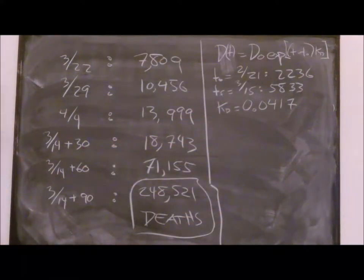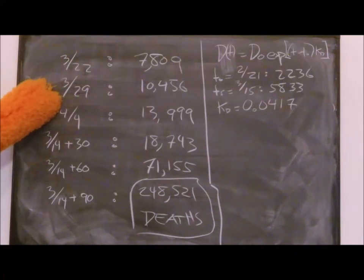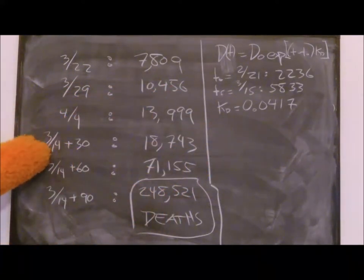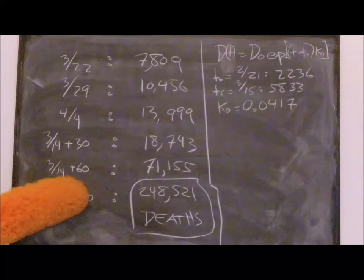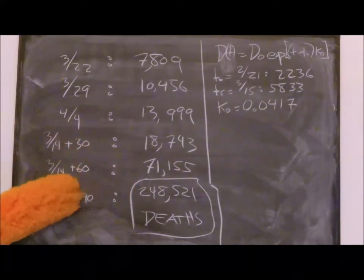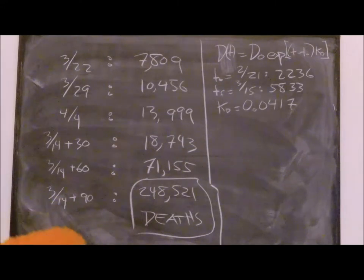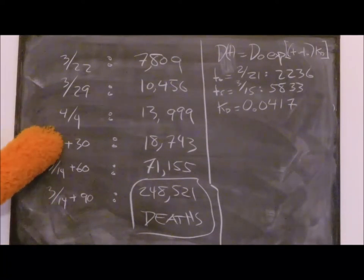I did all this, stuck it in the old Hewlett Packard, and here's what I came up with. March 22nd I predict about 7,800. March 29th about 10,500, speaking in round terms. April 4th I expect about 14,000. Thirty days after March 14th, whatever that is, 18,700 more or less. May, June, 71,155. This is June mid-June, 248,521 deaths.